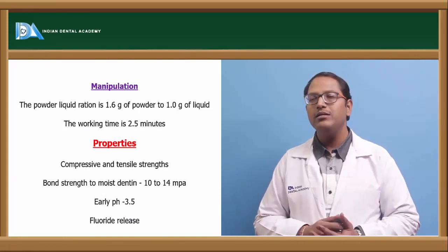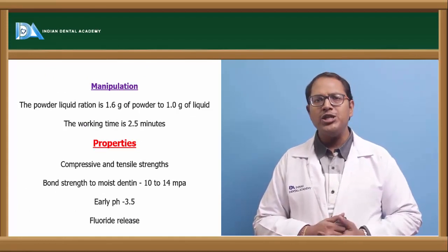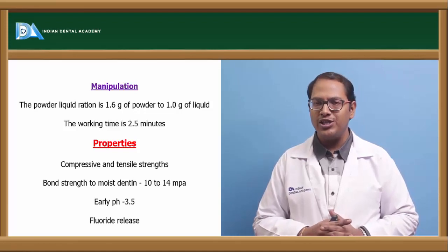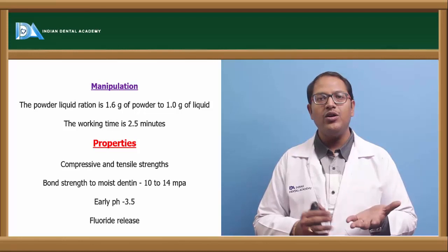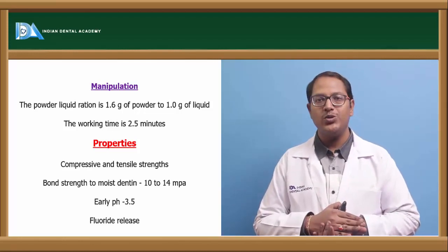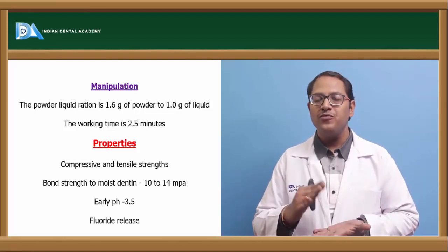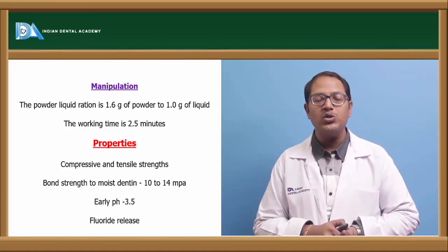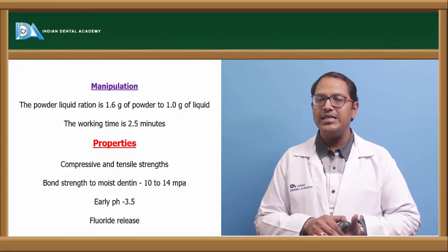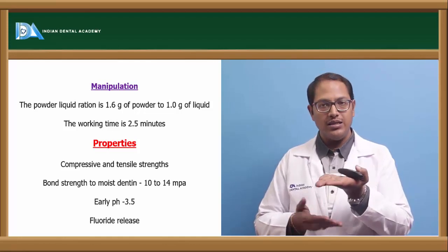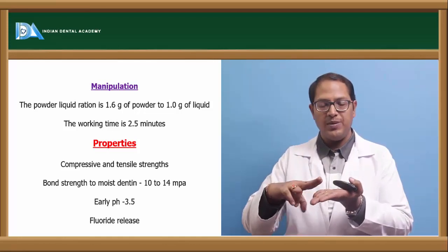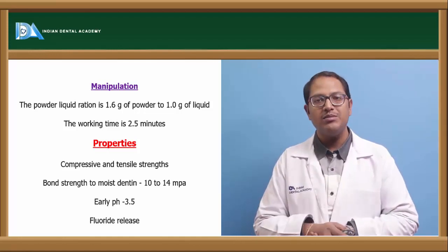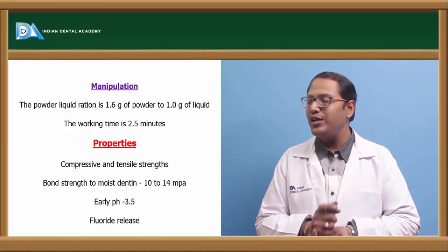The manipulation ratio for hybrid ionomer cement is 1.6 grams of powder to 1 gram of liquid. Glass ionomer cement mixing is done on a paper pad using a plastic or jade spatula. The mixing technique for GIC is called the folding technique — you fold the material in a folding motion — which is why GIC mixing is referred to as the folding technique.